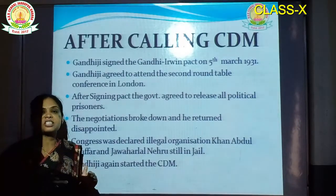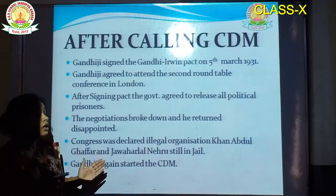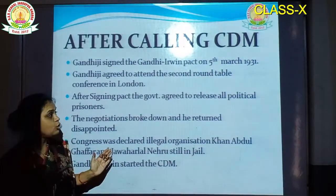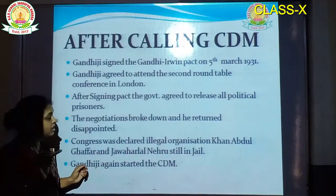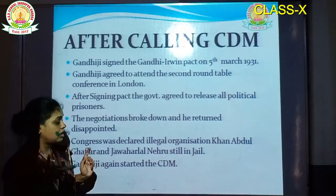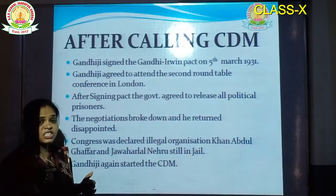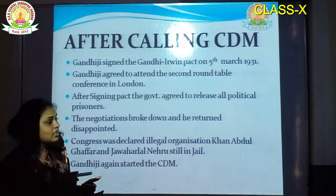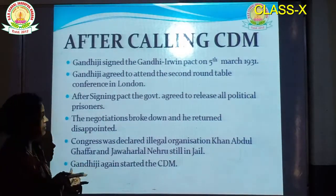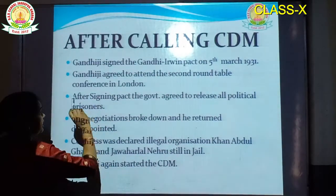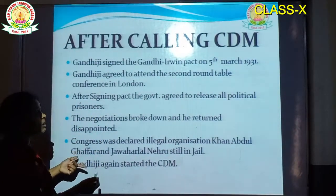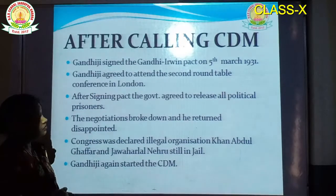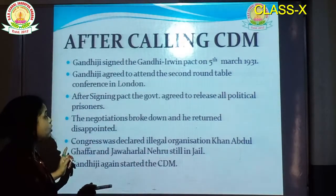Dominion status means like puppet rulers. You have already studied that the British introduced three sections: direct rule, subsidiary alliance, and the doctrine of lapse. Dominion status is similar to subsidiary alliance — like puppet rulers. The first Round Table Conference was unsuccessful. So again, Gandhiji was invited for the second Round Table Conference in London, and Gandhiji agreed to attend it.